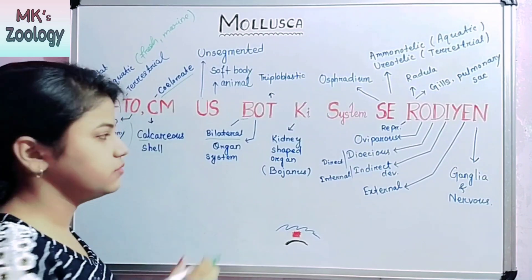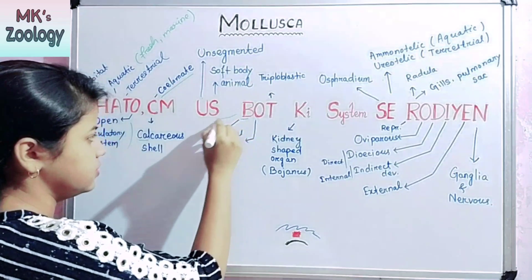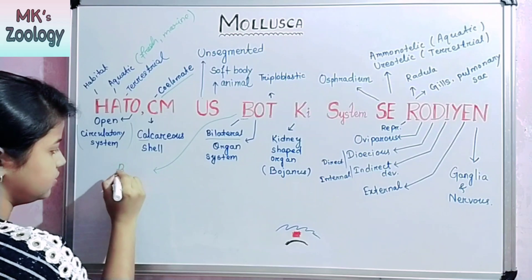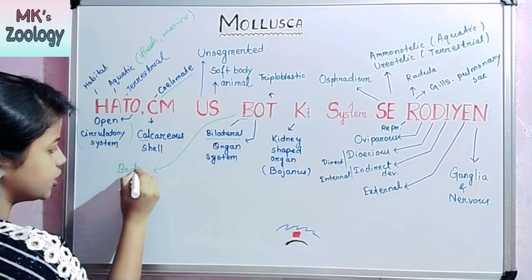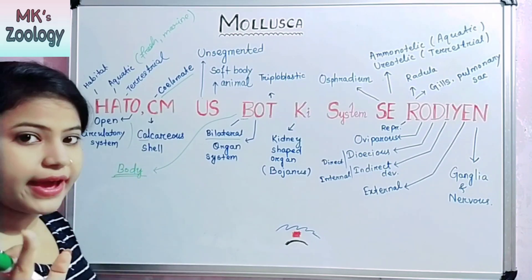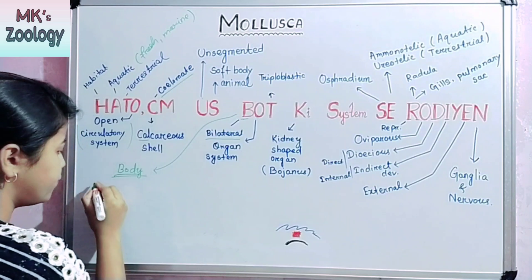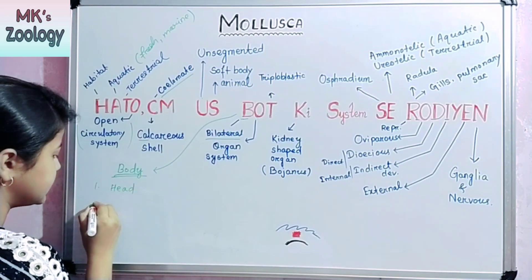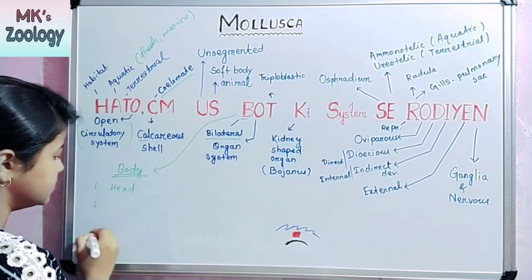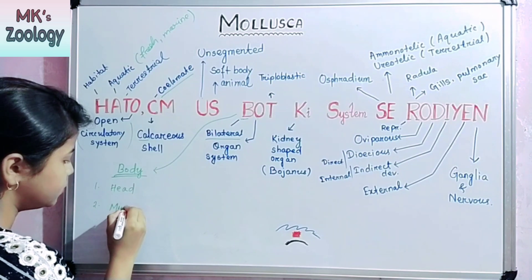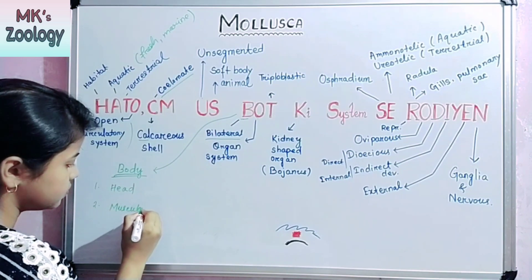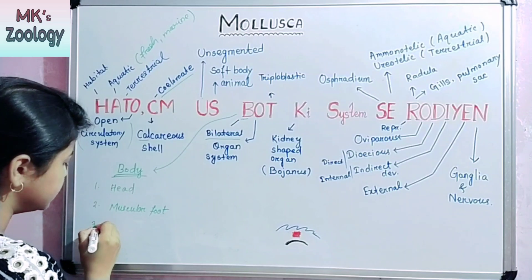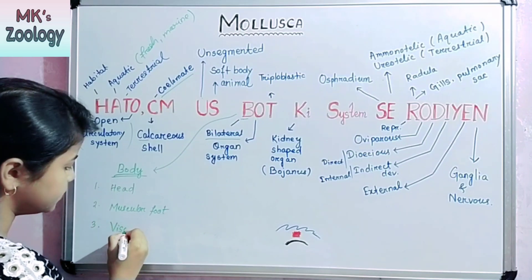B also stands for body. The molluscan body has three parts: first is the head, second is the muscular foot, and the third is the visceral hump.